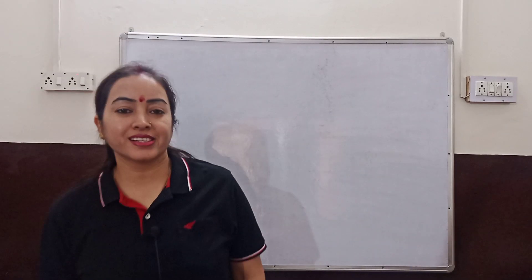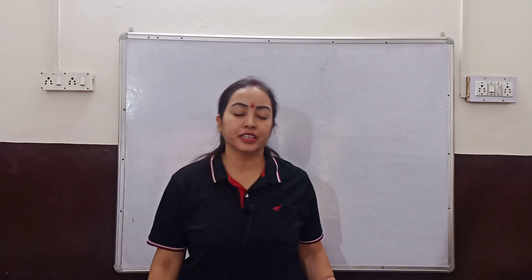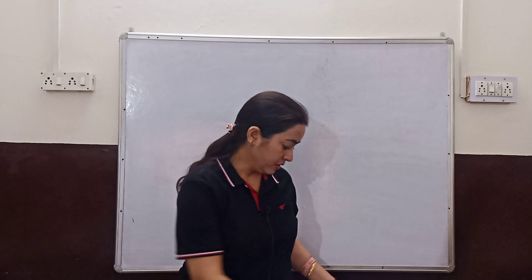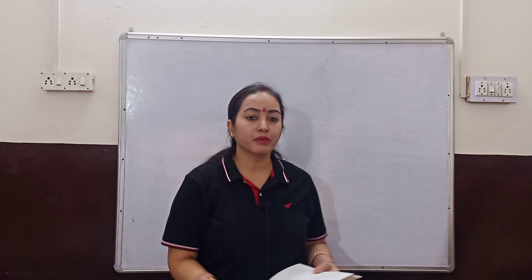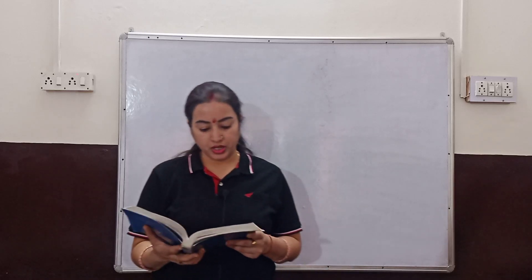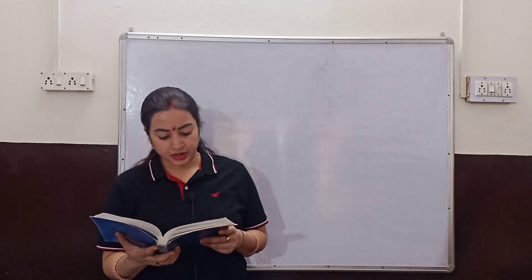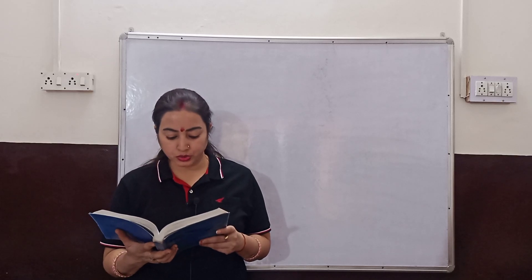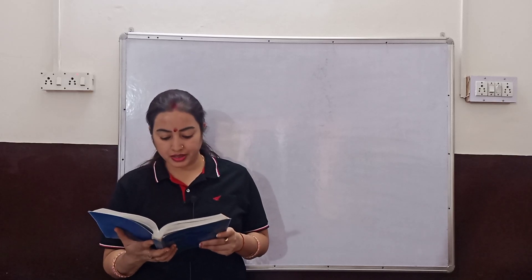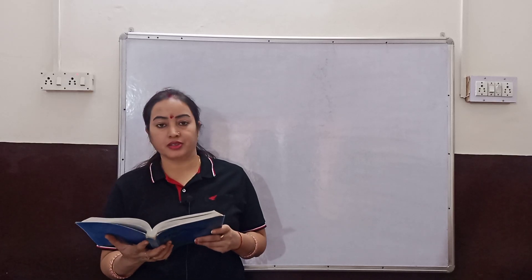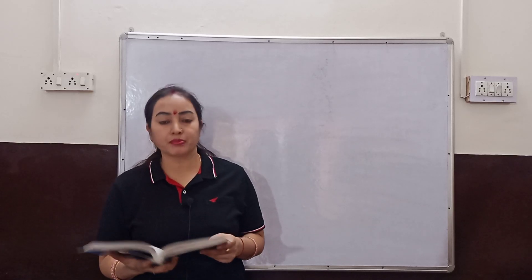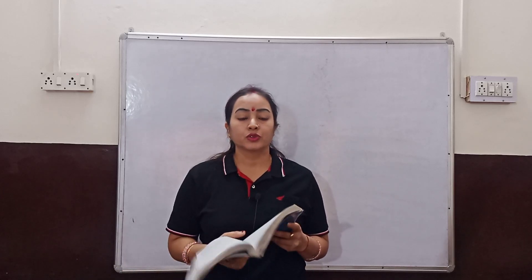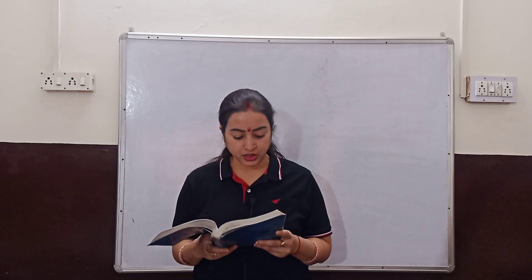Hello students. Let's start with question number 1. First, assume pi is equal to 22 by 7 unless stated otherwise. If pi has not been given to you, you have to use this value of pi.